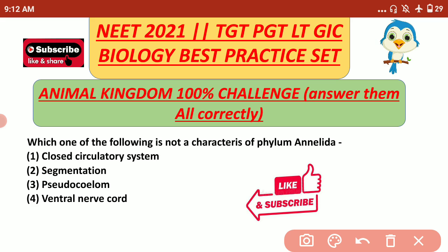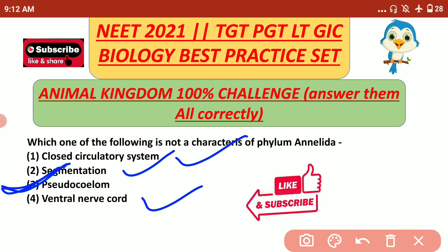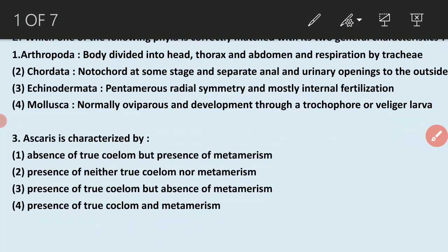The first question is: which one of the following is NOT a characteristic of phylum Annelida? They do have a closed circulatory system. They have a segmented body because annelids have metamerism. They also have a ventral nerve cord, as all invertebrates have a ventral nerve cord while vertebrates have a dorsal nerve cord. So the correct answer is pseudocoelomate — pseudocoelom is NOT a characteristic of Annelida.